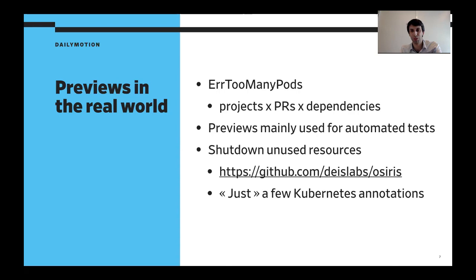Preview environments are mainly used for automated integration tests running in Jenkins builds each time someone pushes a commit. The rest of the time the environment is up and running but mostly nobody uses it, so we're just wasting resources. What would be good is to shut down pods when they're idle. There's a great project called Osiris — now from Microsoft — which you can install in your Kubernetes cluster. It automatically injects a sidecar container into your pod that acts as a transparent switcher proxy and intercepts all incoming requests.